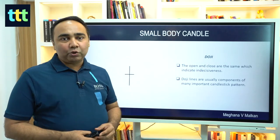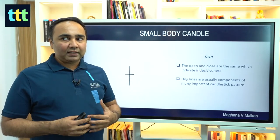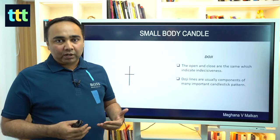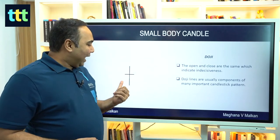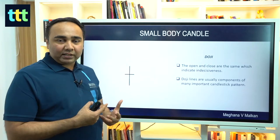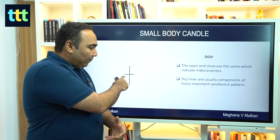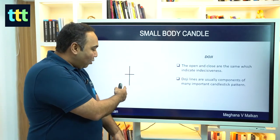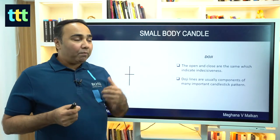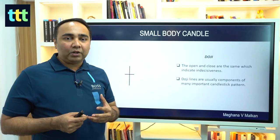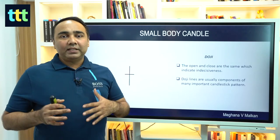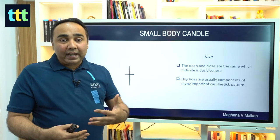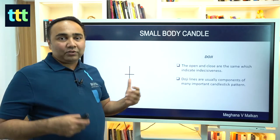Let's start with the first pattern called Doji. You might find some of these names weird, but they come from Japanese words. Doji is a Japanese word — it looks like a cross or a plus sign. The opening and the closing are the same price, so there is no body, just a low and a high. By itself, Doji is a neutral candle — neither bulls nor bears are in control. They are indecisive, not able to decide where to go.